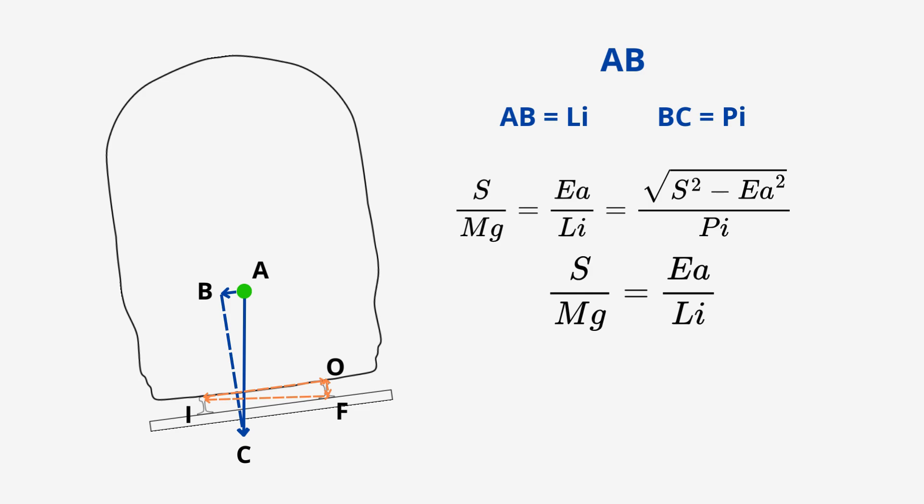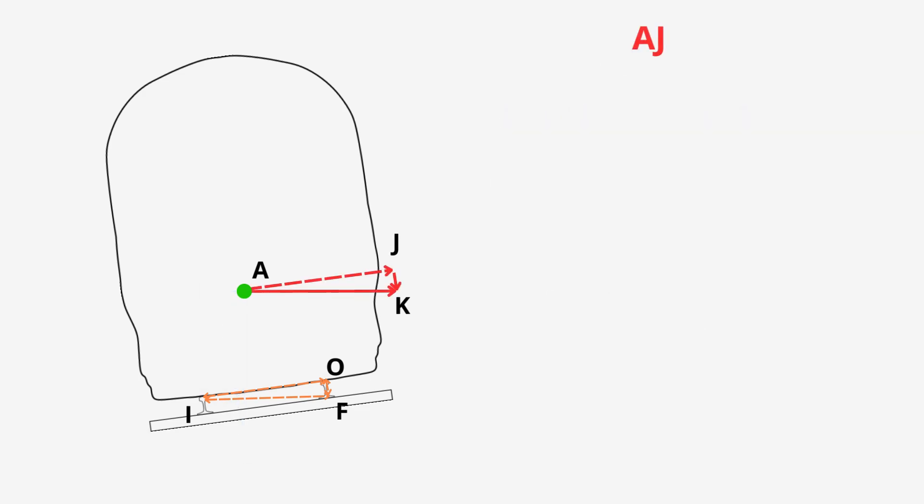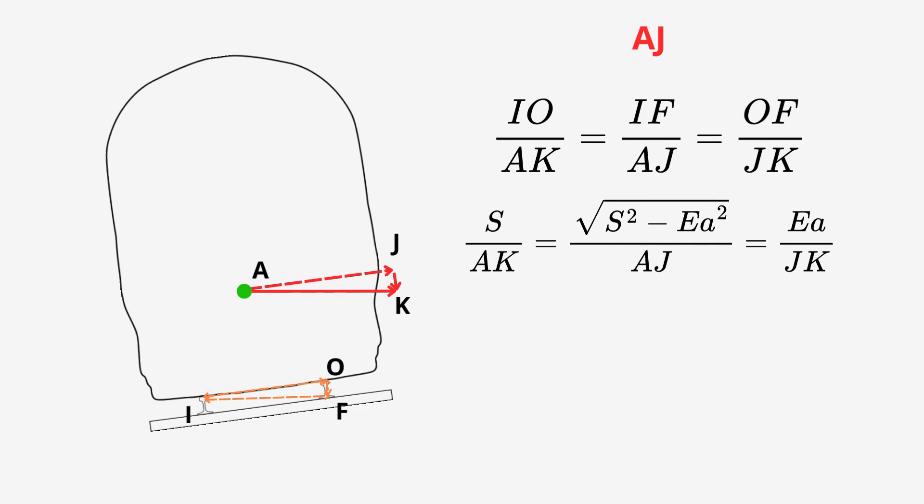We now need the force acting outwards, AJ. Let's clear off the other triangle ABC for some clarity here. And let's apply the similar triangles again. Nice. And finally, let's label up again what we already know. We can put in IO, IF, and OF from our previous work through. Nice and easy.